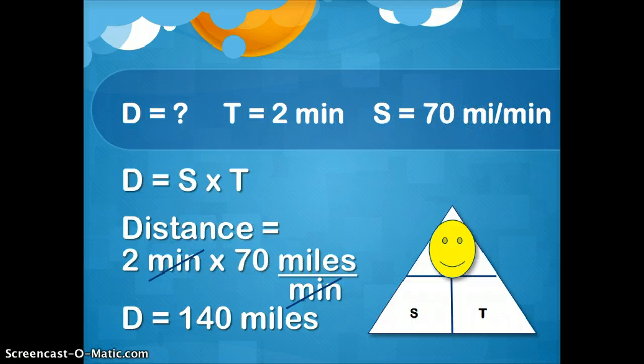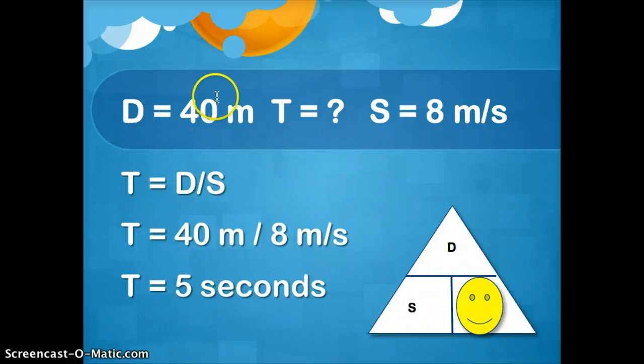And we'll go one more practice problem. Distance is 40 meters. Speed is 8 meters per second. And time is the question mark. So time equals distance over speed. 40 divided by 8 is 5. And it would be seconds.